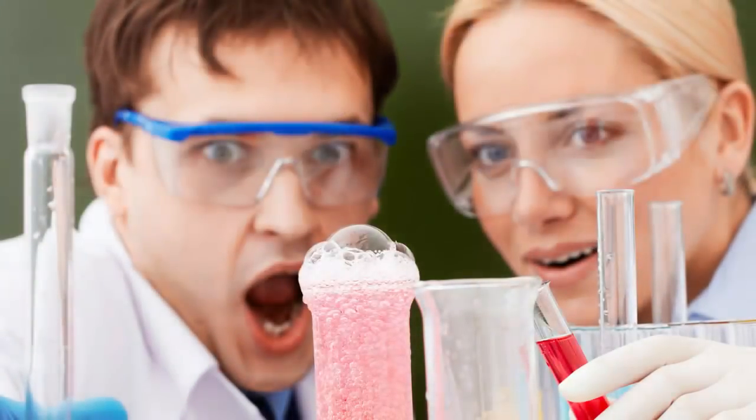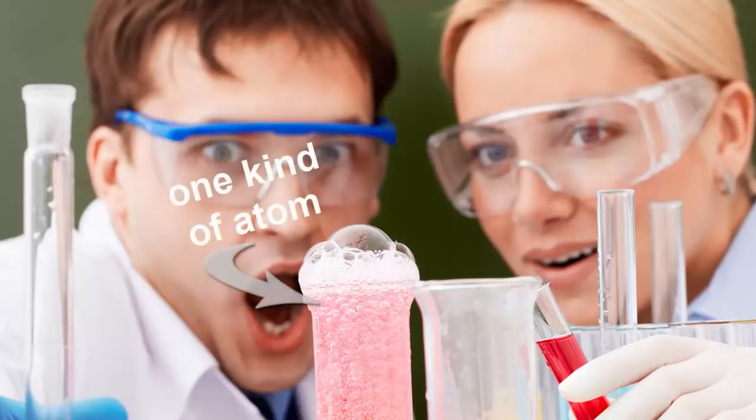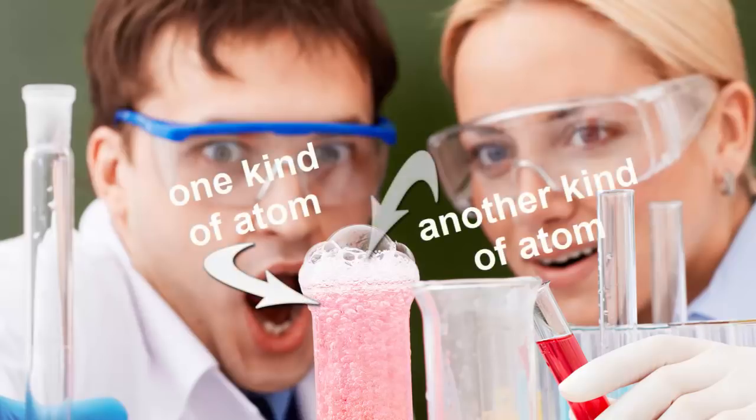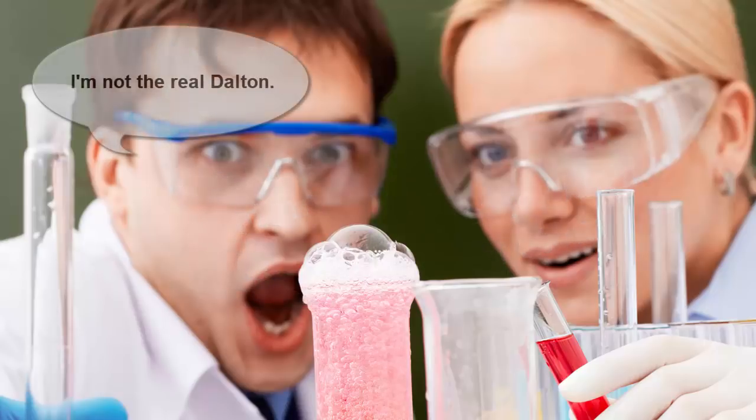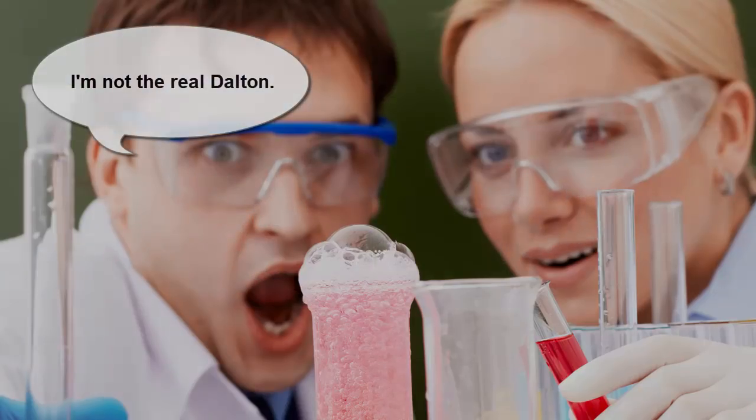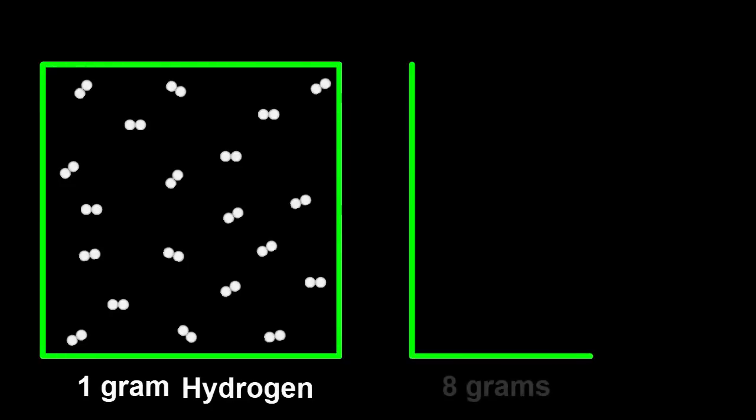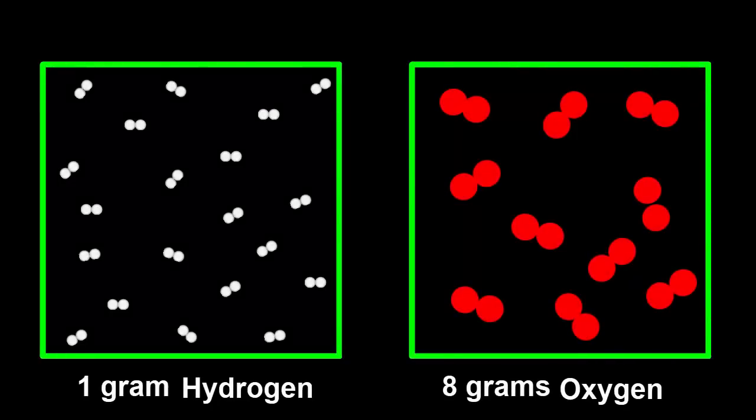About 200 years ago, the famous scientist John Dalton realized he could work out the mass of one kind of atom compared to another kind through chemical experiments. For example, he discovered that one gram of hydrogen gas reacted with eight grams of oxygen gas to make water.